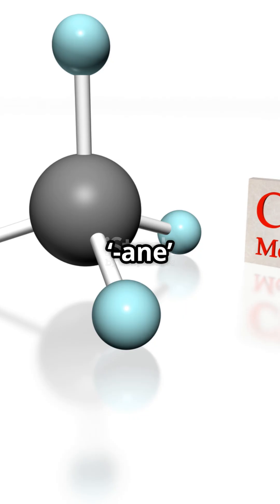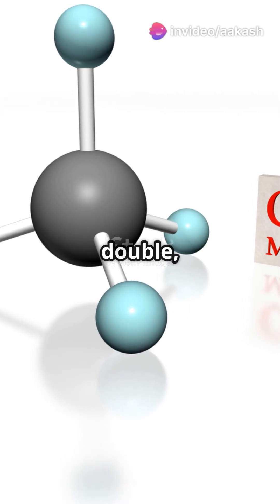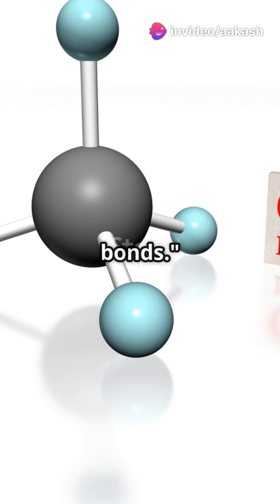The suffix tells us the type of bond. Ane for single bonds, ene for double, and y and e for triple bonds.